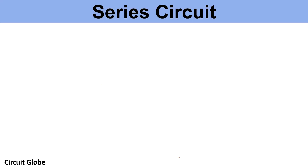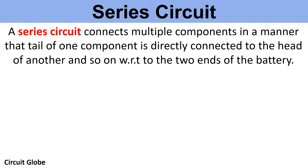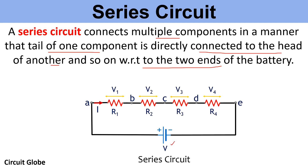Let us first understand what a series circuit is. A series circuit is defined as an arrangement where the various circuit components are placed one after the other. In a series connection, multiple components are connected such that the tail of one component is directly connected to the head of another component, and this whole arrangement is made with respect to the two ends of the battery. As shown in the circuit representation, the tail of R1 is connected to the head of R2, the tail of R2 to the head of R3, and the tail of R3 to the head of R4, with the whole arrangement connected across battery V.